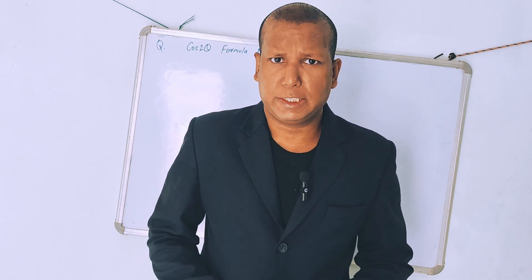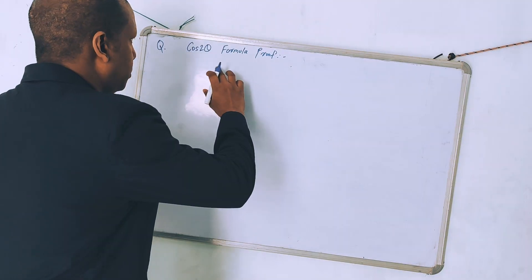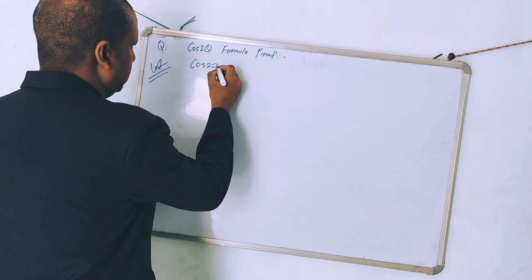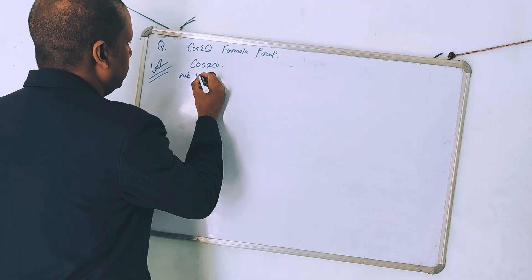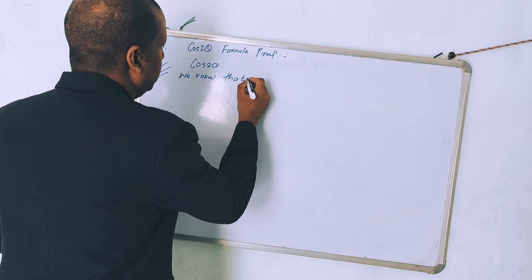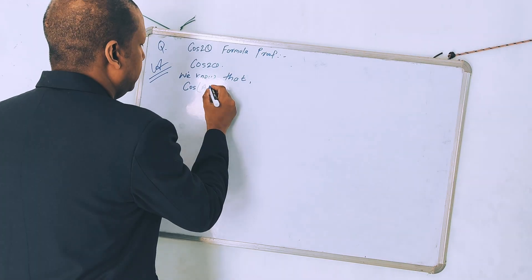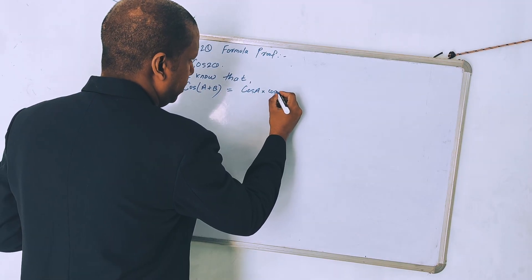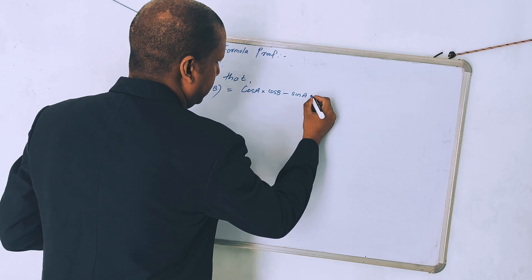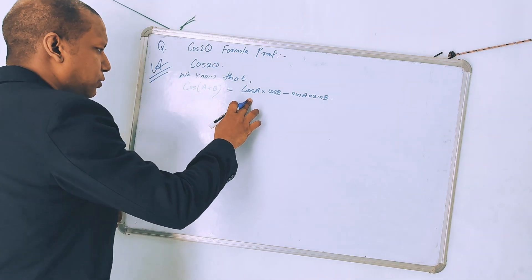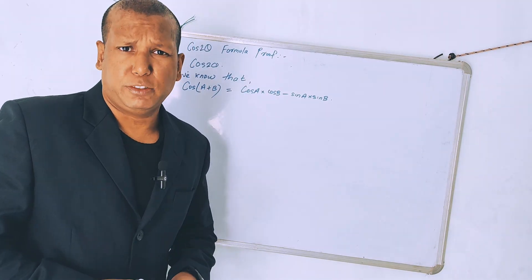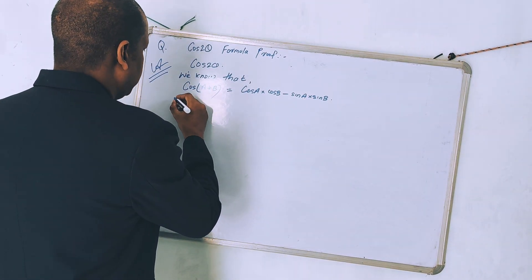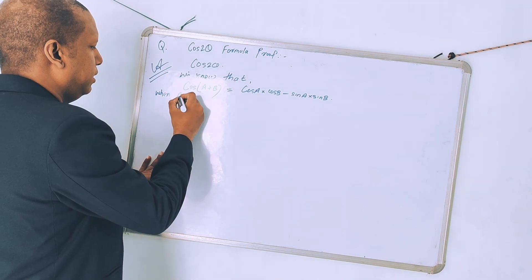Hello kids, in this video lecture I'm going to discuss the cos 2θ formula. So this is cos 2θ. First, we know that the formula cos(A + B) is equal to cos A into cos B minus sin A into sin B. This is an important formula. With the help of this formula, we can get the cos 2θ formulas.